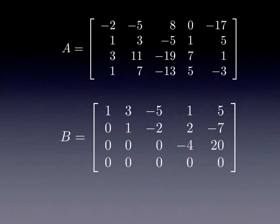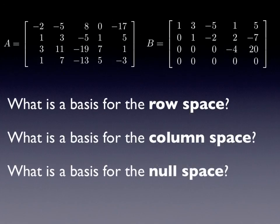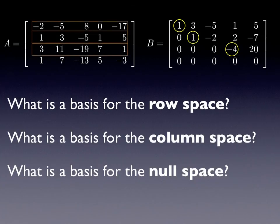Here's an example. We have matrix A and B is its reduced row echelon form. Notice there's a leading one in the first column, the second column, and if we divided the third row by minus four, there would be a leading one in the fourth column. For the basis of the row space, we see leading ones in the first, second, and fourth columns of B — so the first, second, and fourth rows of B form a basis for the row space. It's also true that the first, second, and third rows of B have leading ones, and so the first, second, and third rows of A also form a basis for the row space.